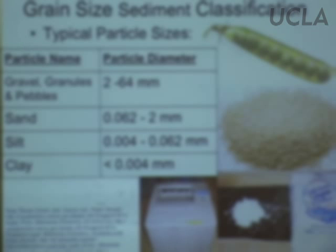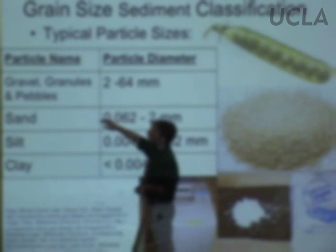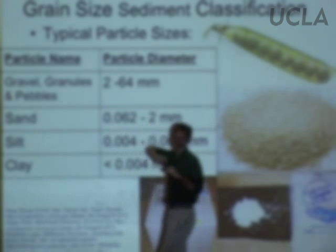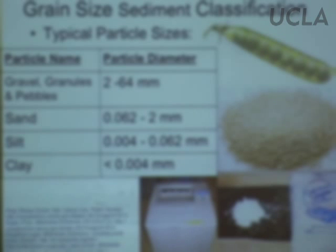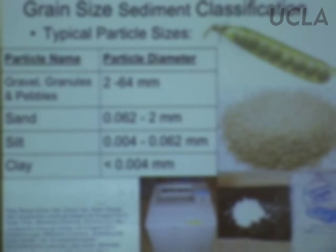Perhaps an even more straightforward way to classify sediments on the seafloor is according to particle size. In your book and lab you'll see slightly different classification schemes; here's a simplified version. The coarsest type of sediment is gravel, granules, or pebbles — things bigger than a couple of millimeters. There are of course bigger grains like boulders, but lumping those together: gravel and pebbles. Twenty-five to twenty-six millimeters is one inch, so a good pebble size — think peas in a pod.